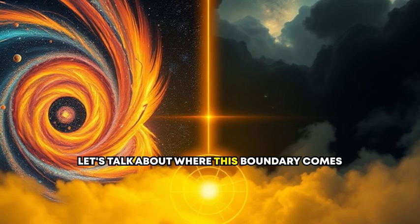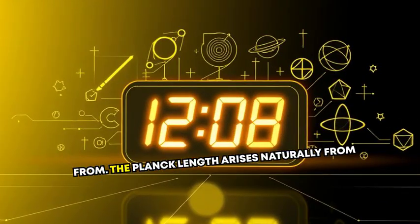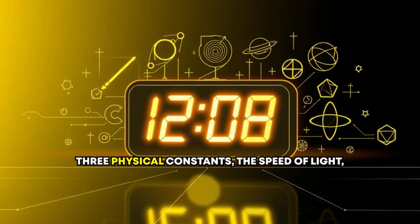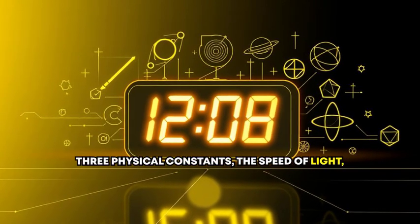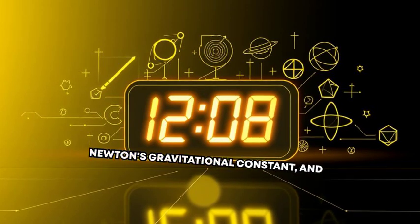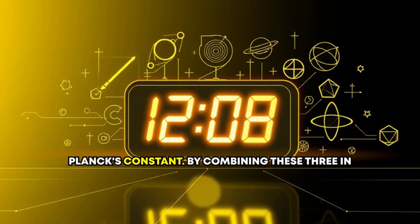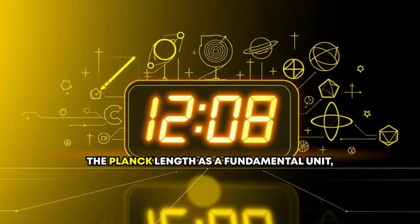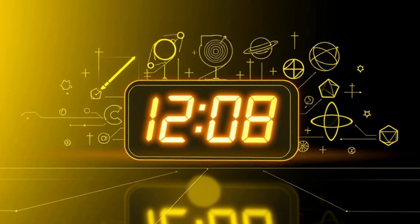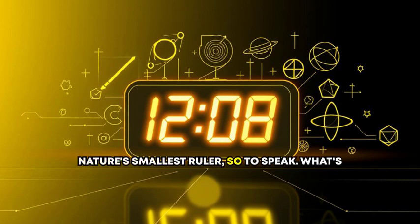Now let's talk about where this boundary comes from. The Planck length arises naturally from three physical constants: the speed of light, Newton's gravitational constant, and Planck's constant. By combining these three in the right mathematical cocktail, you derive the Planck length as a fundamental unit. Nature's smallest ruler, so to speak.